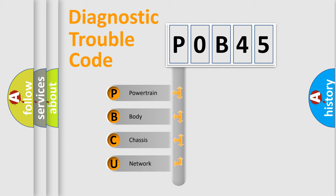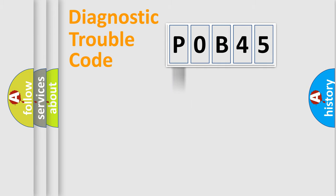We divide the electric system of automobile into four basic units: Powertrain, Body, Chassis, and Network. This distribution is defined in the first character code.